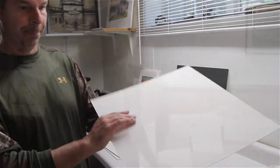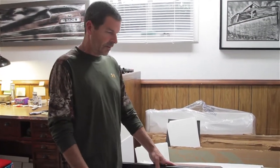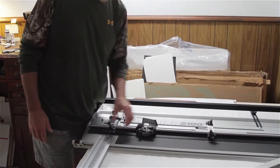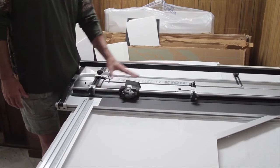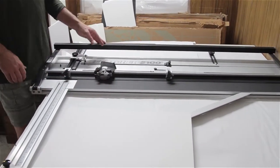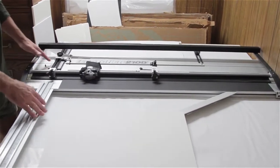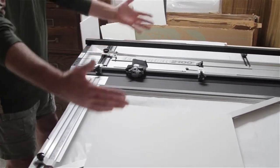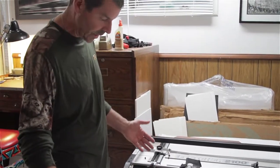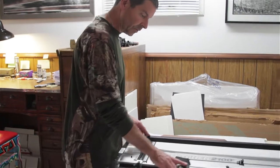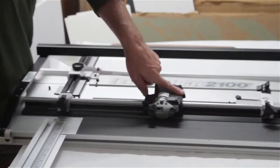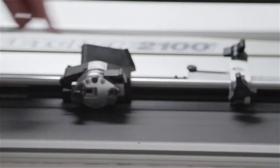This is a Fletcher 2100 mat cutter. It's got stops here and here that you can set to the dimensions you want your borders to be. It also has a stop down here for cutting boards to 16 by 20 or 11 by 14. It's got two blades - one that's a straight cutter for cutting raw boards and the other is a bevel cutter for cutting the beveled mats.